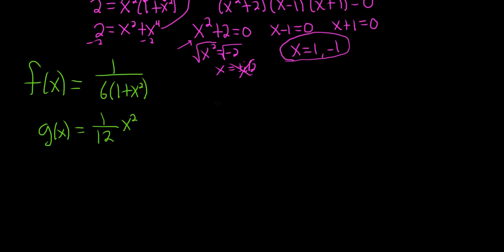Alright, so this will be the y axis. And then this is the x axis. So x and y. And our points of intersection are 1 and negative 1. So I'm going to go ahead and put the 1 here. And I'll put the negative 1 here.